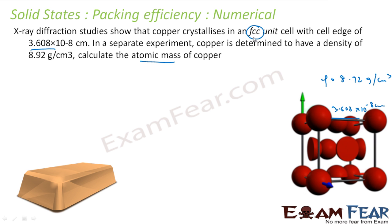Since it is FCC, we know that Z is 4. There are 4 atoms in this cell. The formula we know is D = Z × M / (Na × A³).